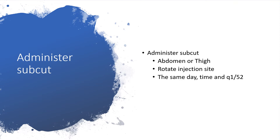PEGylated interferon alpha 2a can be administered subcutaneously. You can use the abdomen or thigh, and you have to rotate the injection site. Those who have been given insulin subcutaneously before will understand this better. You can give this medication on the same day at the same time every week.